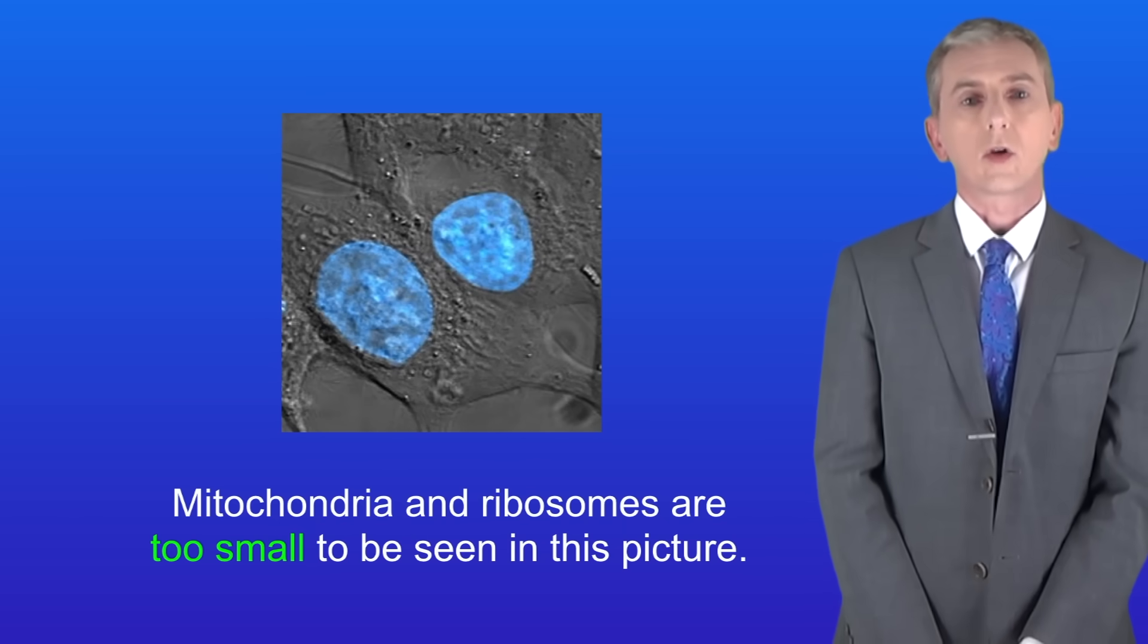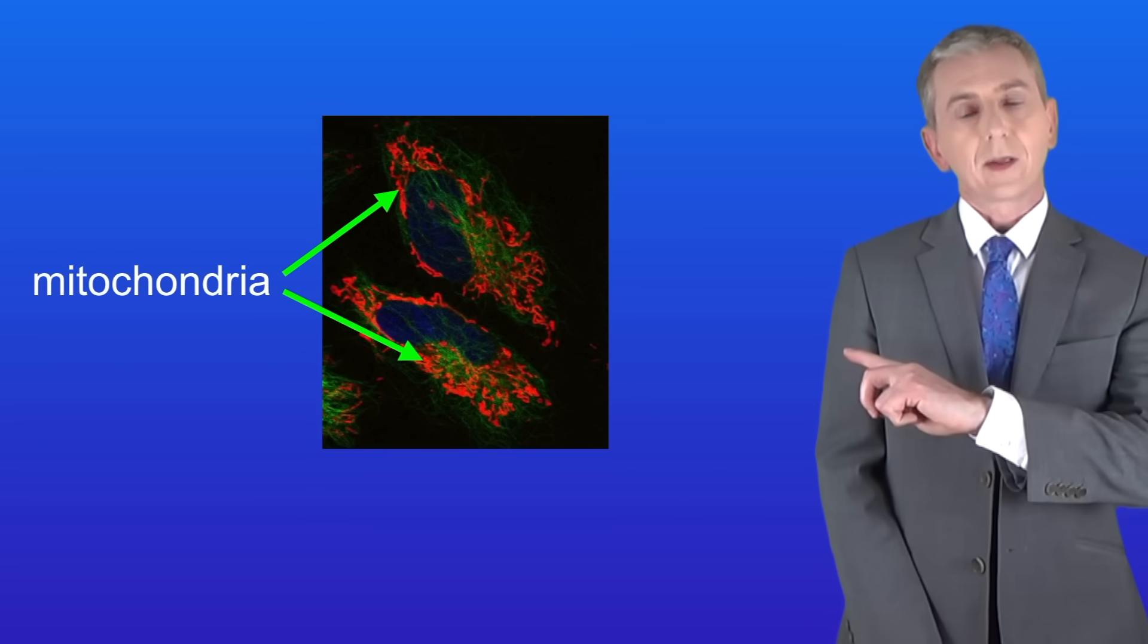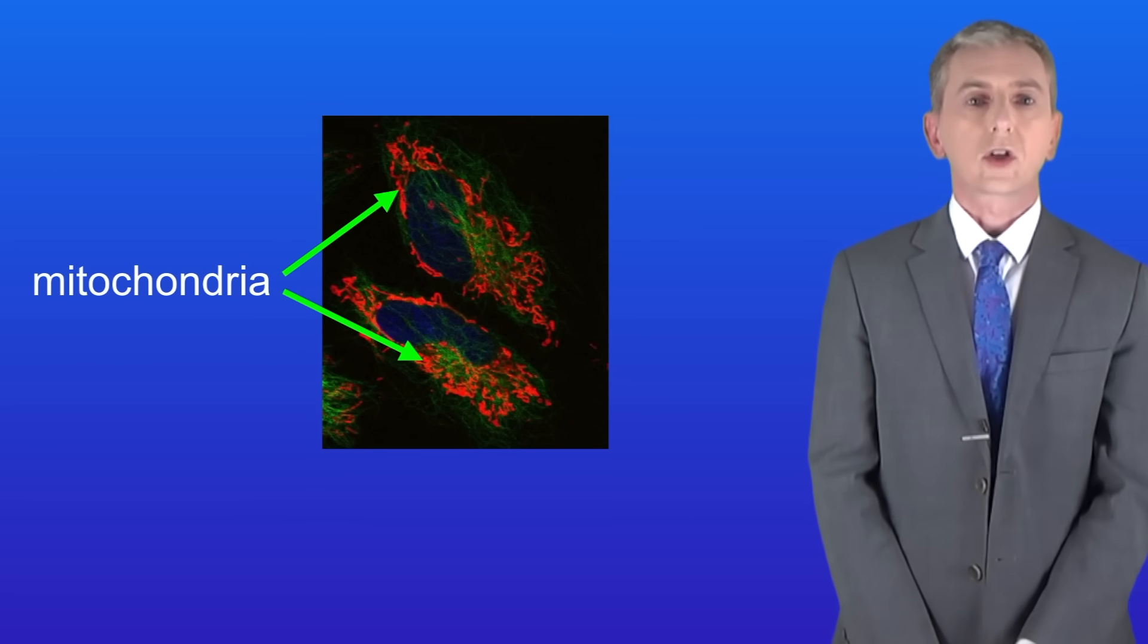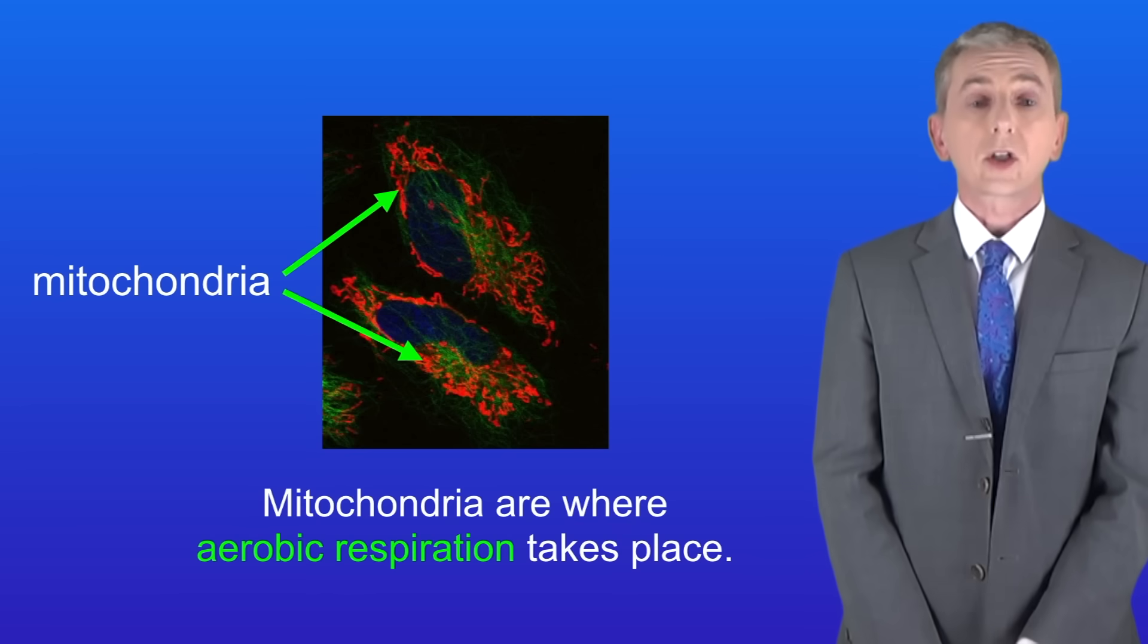Now we cannot see either mitochondria or ribosomes on this picture and that's because they're too small. These cells have been stained with the red dye to show the mitochondria. Now the mitochondria are where aerobic respiration takes place and you do need to learn that. We're going to be looking at respiration in more detail in later videos.